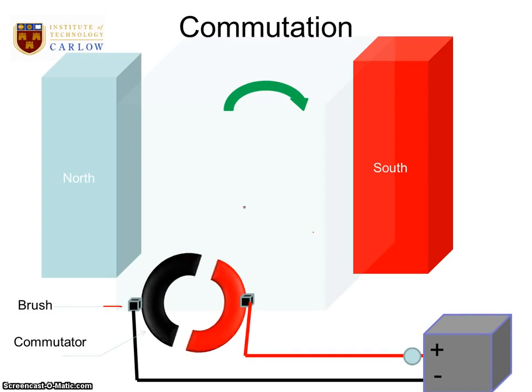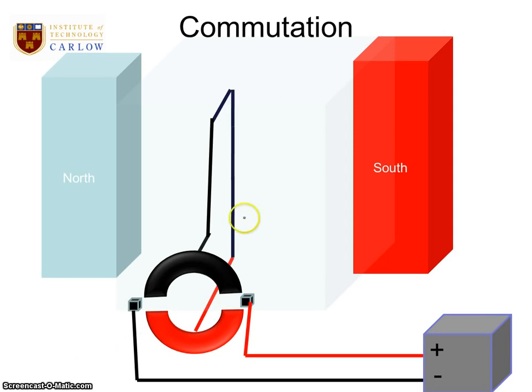As it rotates, the commutator rotates until we get to this position. When we're in this position, the current doesn't go through the commutator. We have a gap. So we are relying on the inertia of the motor to bring it around.